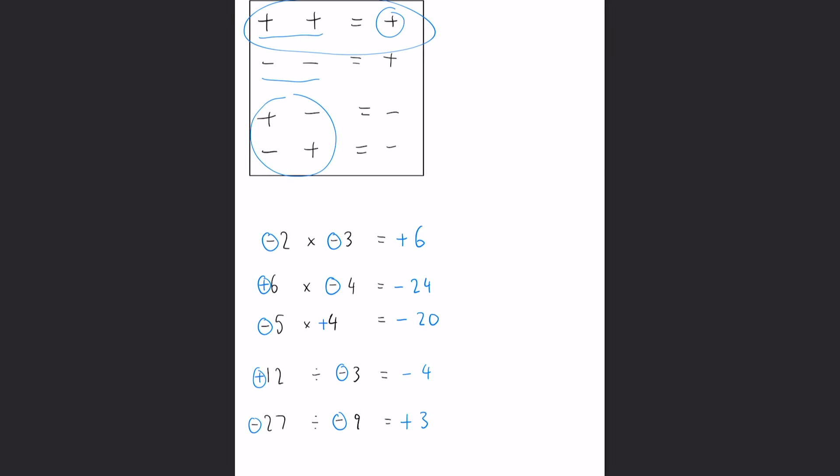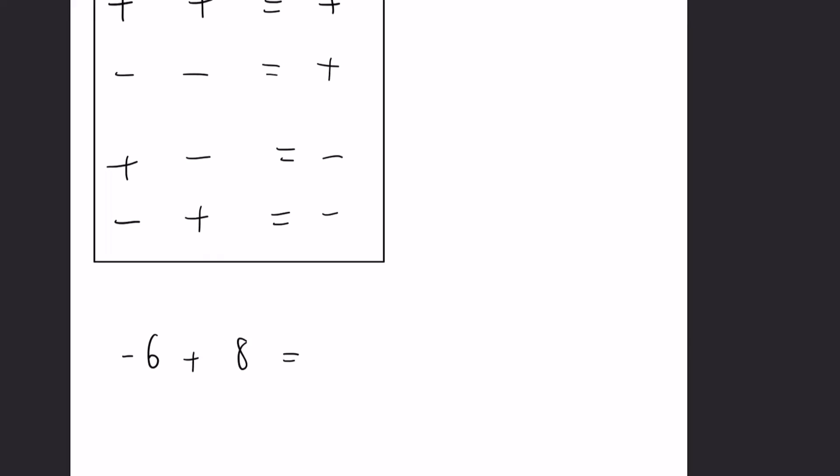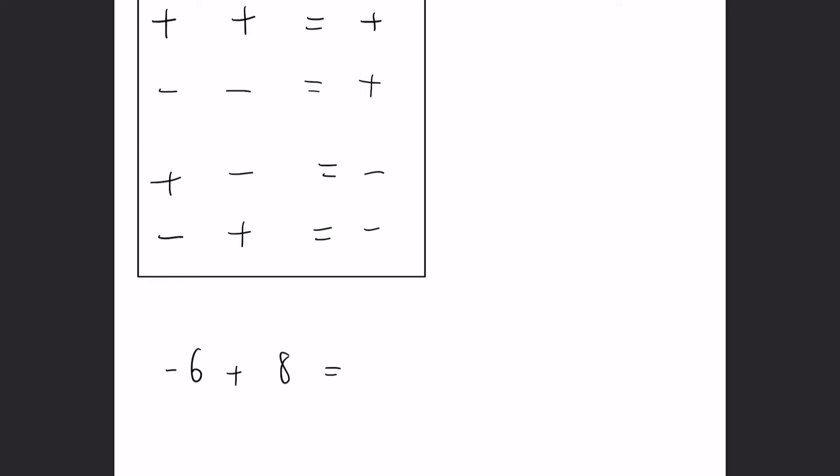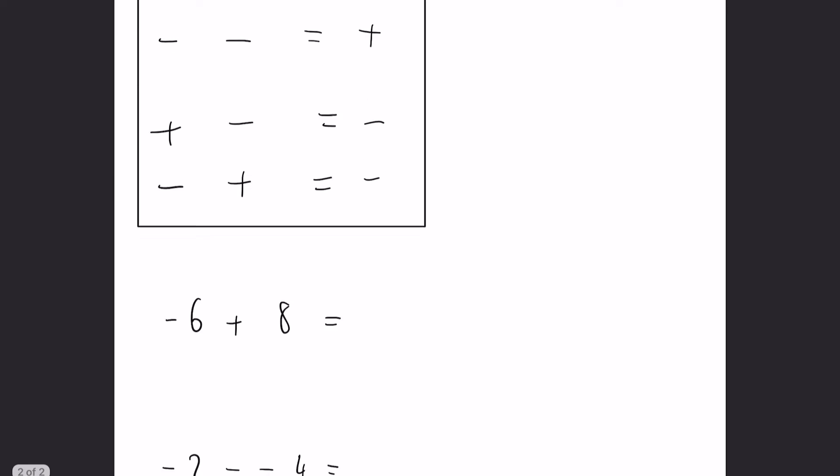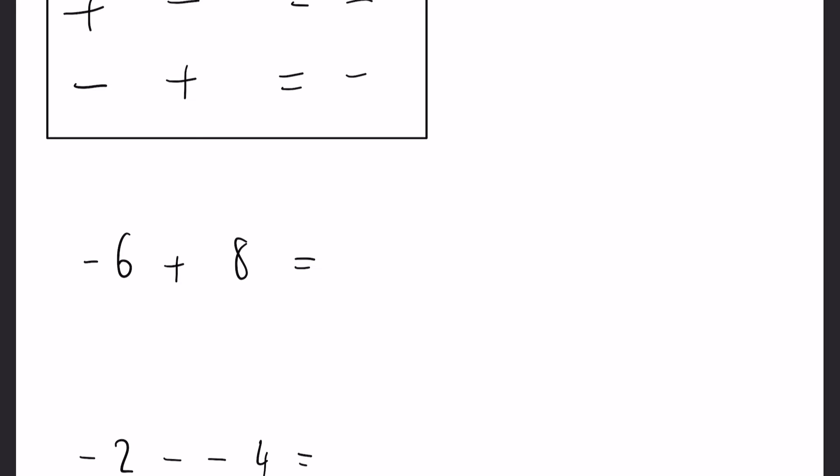Now addition and subtraction is slightly different and a lot of people get confused between these. So our rules still stand but you apply them in a slightly different way. So here we can't actually predetermine what our answer is going to be.